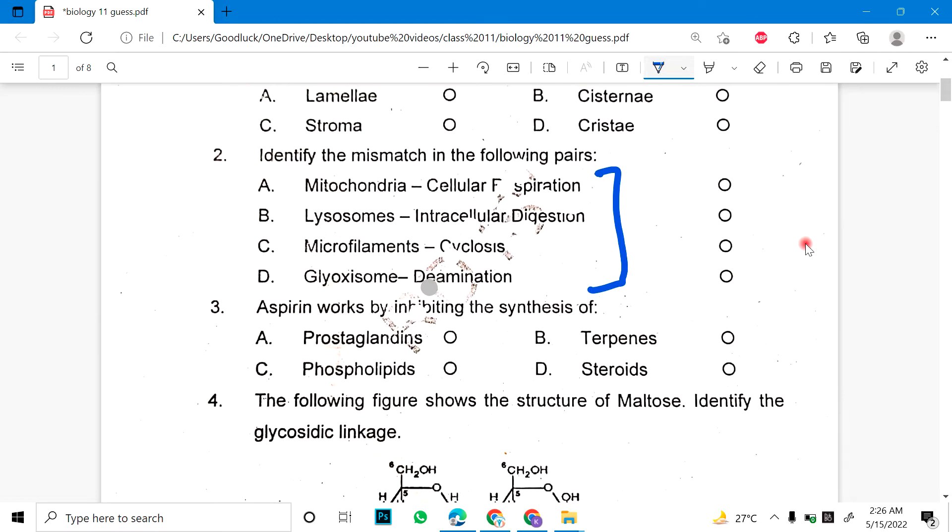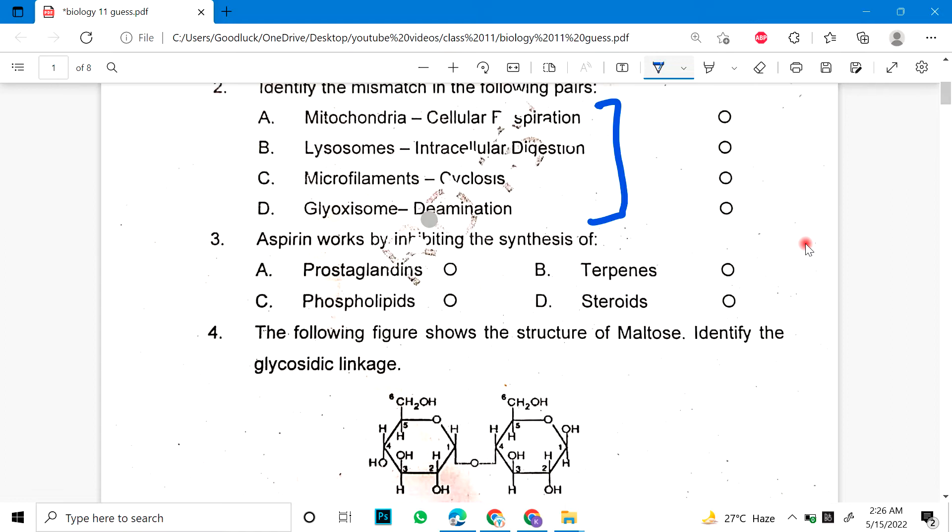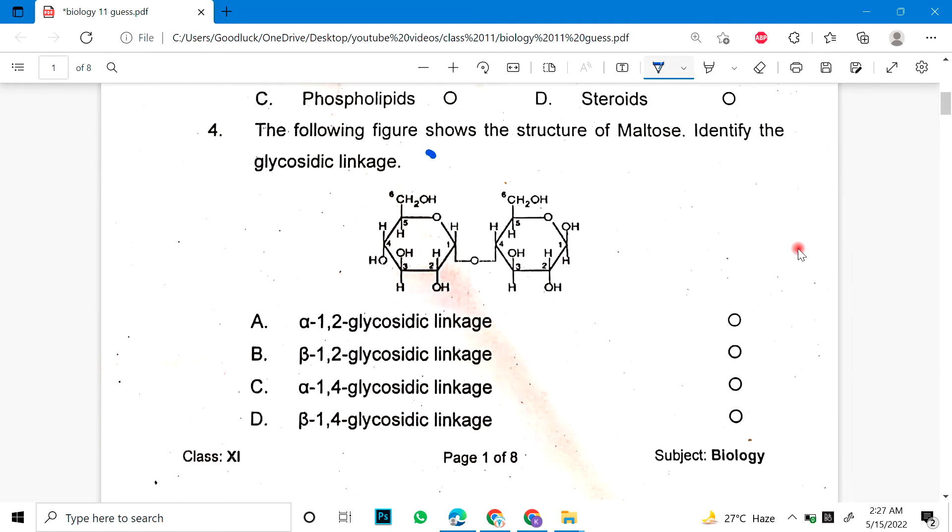Number 3: Aspirin works by inhibiting the synthesis of. Number 4: The following figure shows the structure of maltose. Identify the glycosidic linkage. So, this diagram is made by glycosidic linkage.